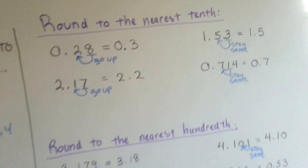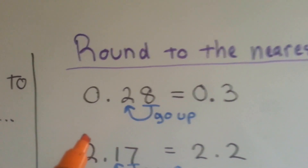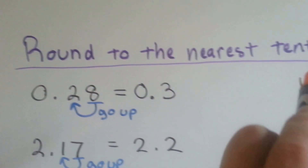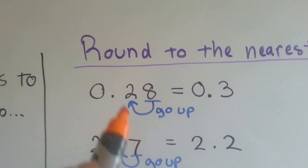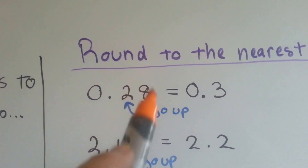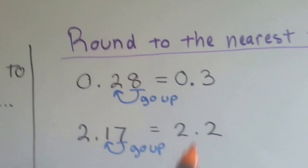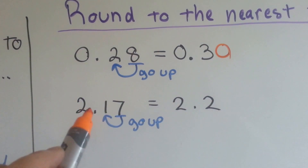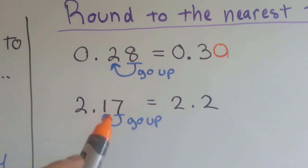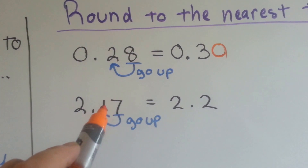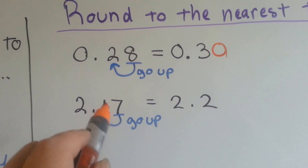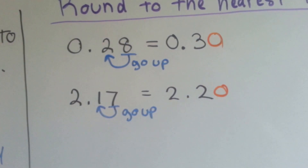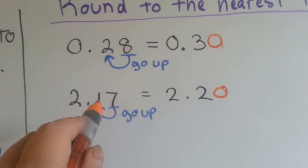So if we were to round these to the nearest tenth — we've got twenty-eight hundredths, and if we were to round it to the nearest tenth, the eight tells the two to go up to three, and then it disappears or turns into a zero. We could have even put a zero there and that would have been alright. For two and seventeen hundredths, the seven tells the one to go up to a two, and then it either drops off or we could put a zero there.